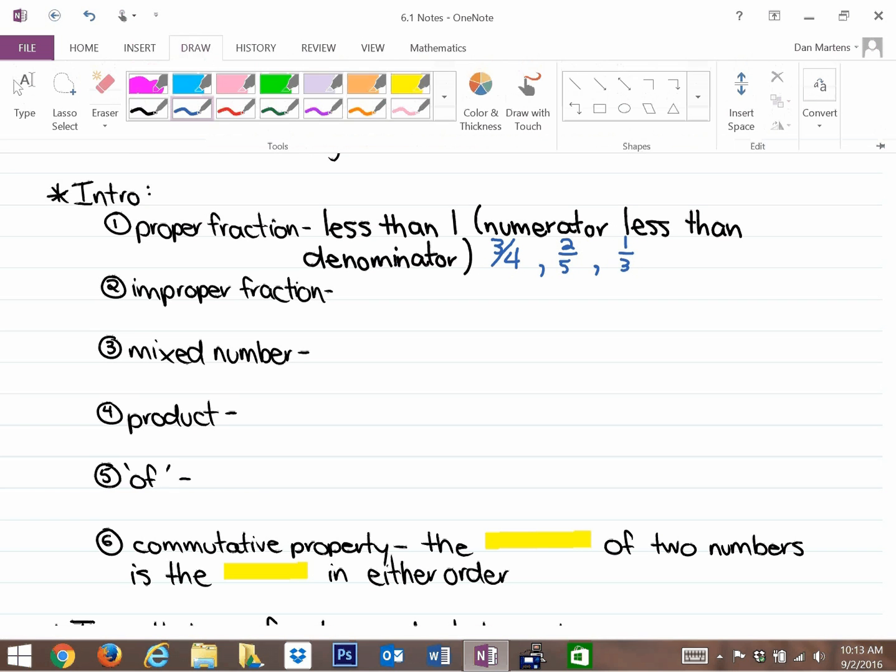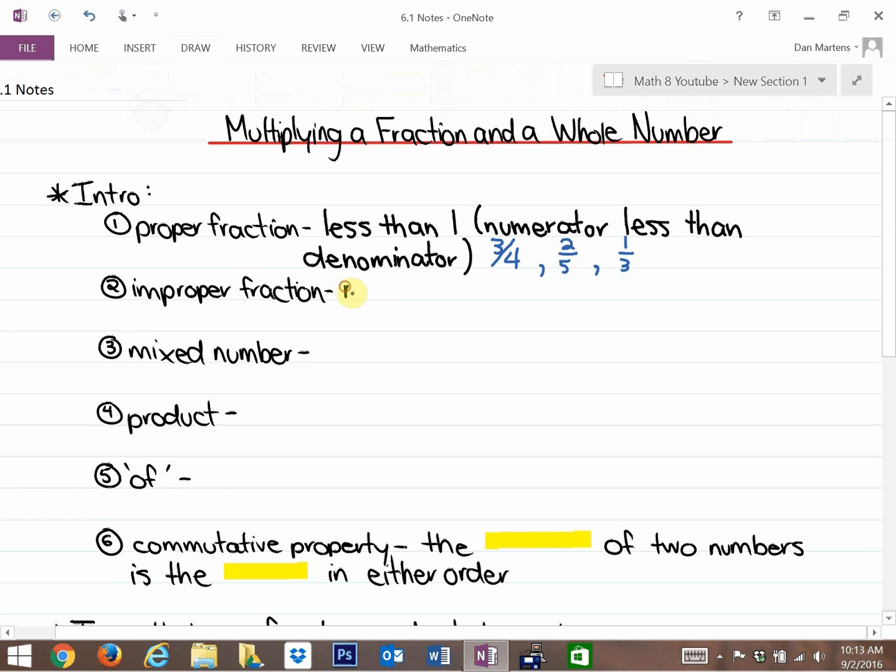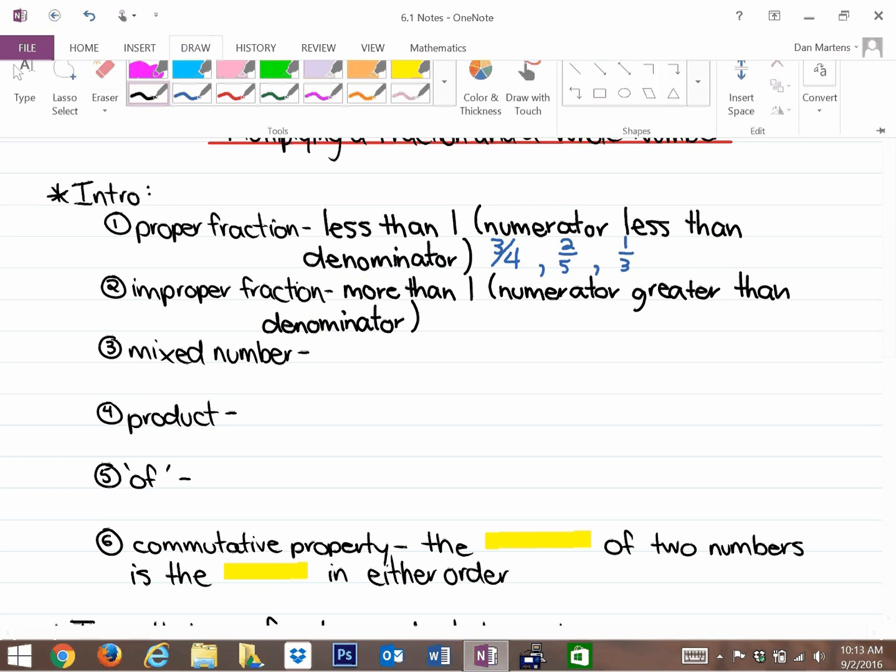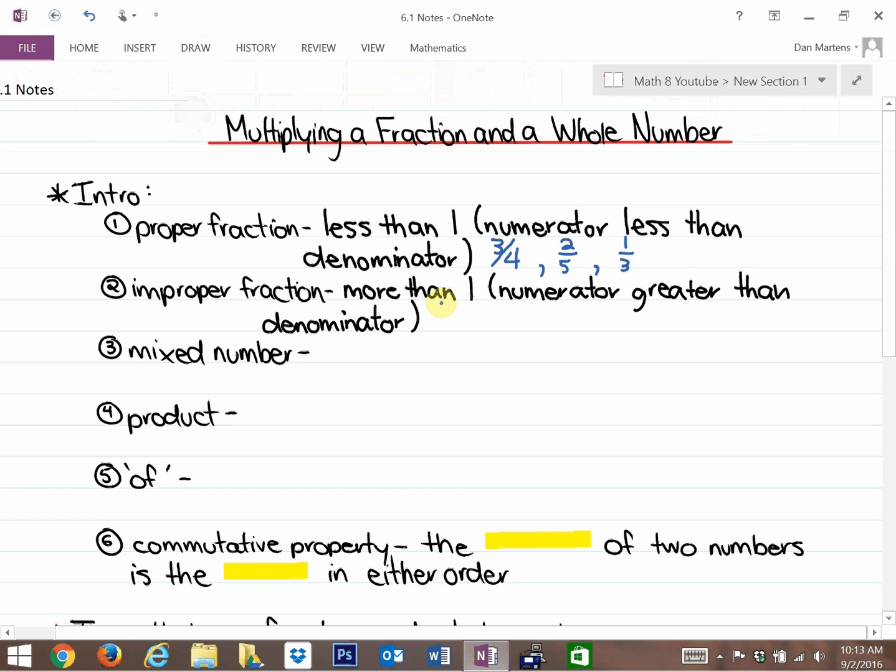Whereas an improper fraction is a fraction that represents more than a whole, more than one whole. And it's the exact opposite of a proper fraction. In other words, the numerator is greater than the denominator. There's lots of possible examples. 4 thirds is more than one whole, because it's 4 thirds, more than 3 thirds, which is one whole. Another example would be 5 over 2, or 9 over 4.